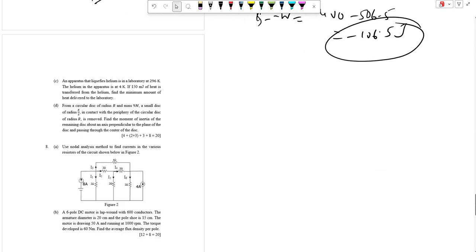Next is an apparatus that liquefies helium. Helium is in a laboratory of 296 Kelvin and the helium apparatus in 4 K and 150 MJ is the heat transferred from the helium. So the minimum amount of heat delivered to the laboratory, so the liquefies helium at 4.2 K.